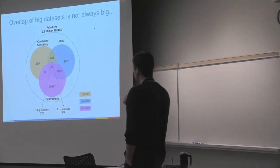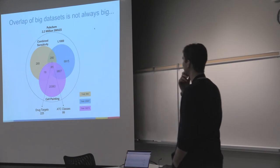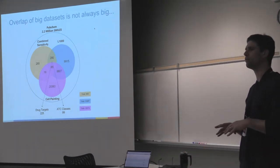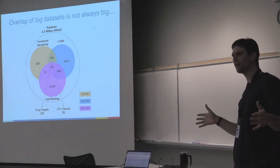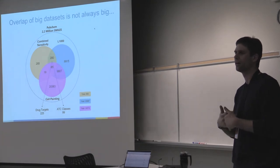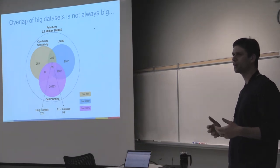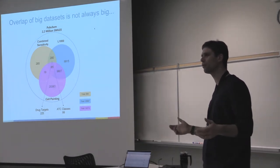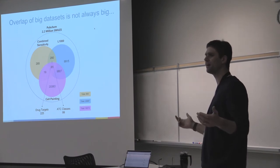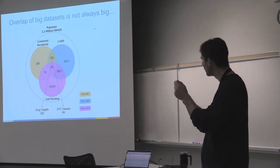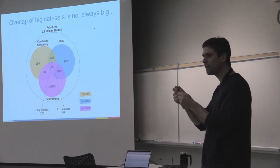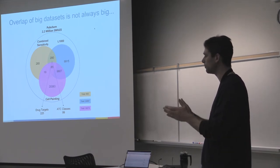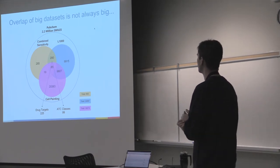Something about big data: everybody talks about big data, but when you take many big datasets the overlap is very small. That's very common in practice — if you talk to people, they always have big data, but when you start being picky about the quality or the subset you want, it becomes very small very quickly.